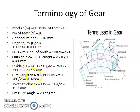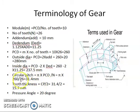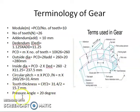The circular pitch is pi times the pitch circle diameter divided by number of teeth — that is pi into 260 divided by 26, giving 31.4 mm. The tooth thickness is the circular pitch divided by 2, that is 31.4 divided by 2, equal to 15.7 mm. The pressure angle value is 20 degrees. This completes the terminology of the gear.